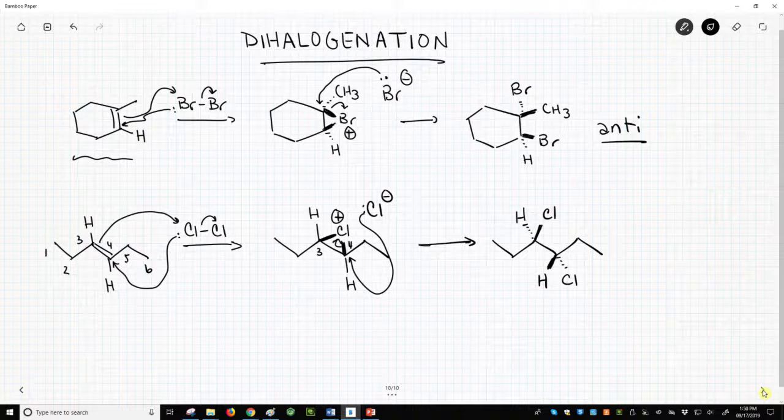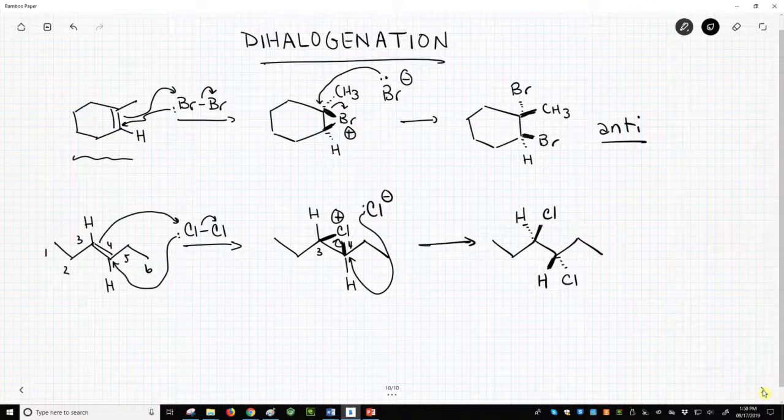Seeing syn and anti with acyclic alkenes can be a challenge, but we've drawn this product to make the anti-relationship, one up, one down, of the chlorine atoms as clear as possible.